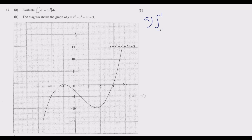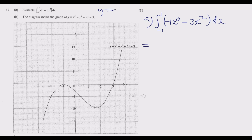So 1 times negative 1 is negative 1, then minus 3x squared dx. Now remember the principle of integration: if you have y equals x to the power n, when integrating, this becomes x to the power n plus 1 over n plus 1. That's the principle we're going to use.